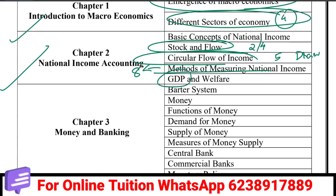Methods of measuring national income. The GDP deflator and number of equations in national income. GDP is not a good indicator of welfare, and unequal distribution of income is also discussed.